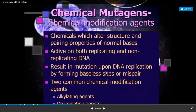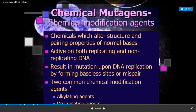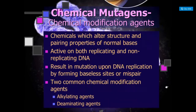The next type of chemical mutagenic agents are chemical modification agents. These chemicals alter the structure and pairing properties of normal bases. They are active on both replicating and non-replicating DNA molecules. They result in mutation upon DNA replication by forming baseless sites or mispairing. Common types are alkylating agents and deaminating agents.